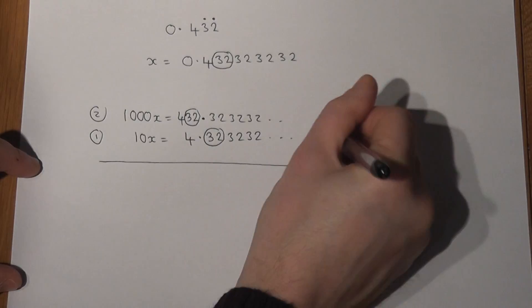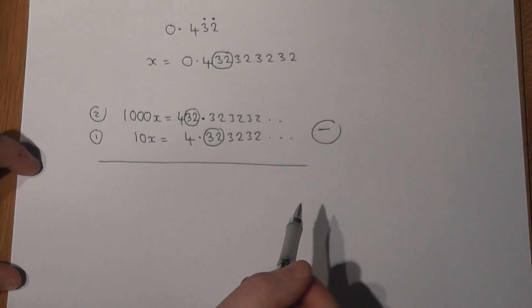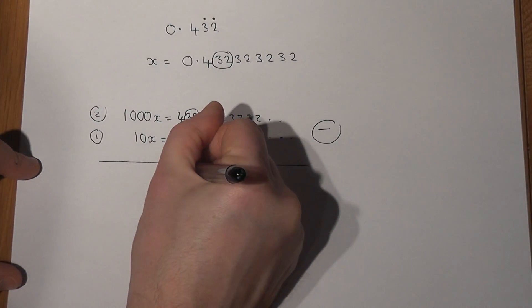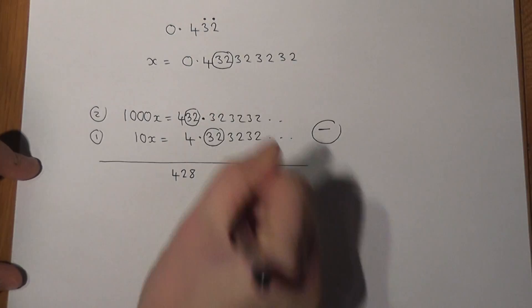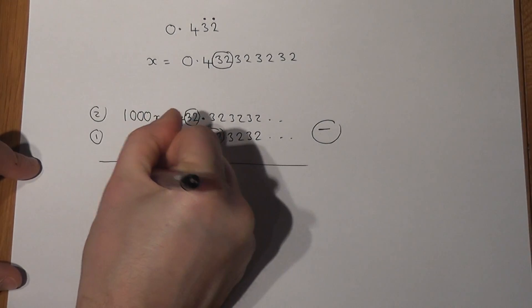Now as before, if I now subtract, all the numbers after the point will cancel out. So 432 take away 4 is 428. And 1000 take away 10 is 990X in this case.